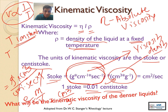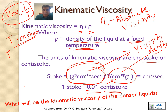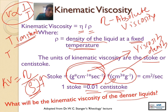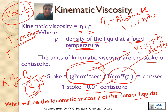A question I always ask my students: what will be the kinematic viscosity of a denser liquid? Kinematic viscosity equals eta divided by density, so density is in the denominator. Higher the value of density, lower the value of kinematic viscosity. So if you have two Newtonian liquids and one is denser than the other, and you measure their viscosity at the same temperature, the denser liquid will have less kinematic viscosity.